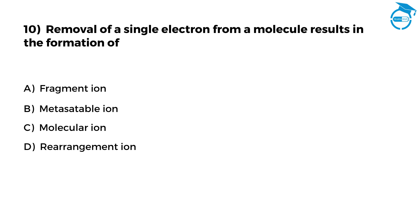Here is the last one. Give it a try. Removal of a single electron from a molecule results in the formation of. Option A, fragment ion. Option B, metastable ion. Option C, molecular ion. Option D, rearrangement ion.